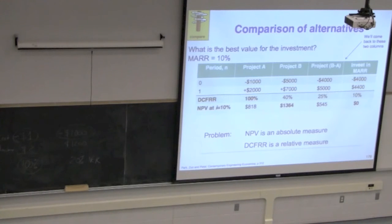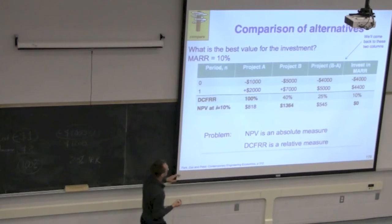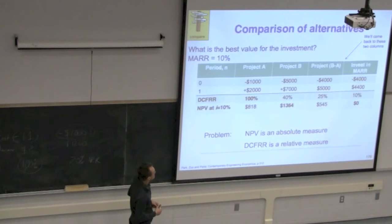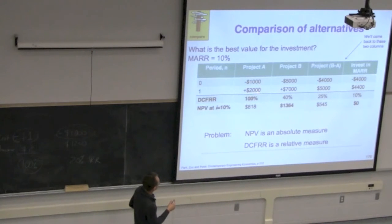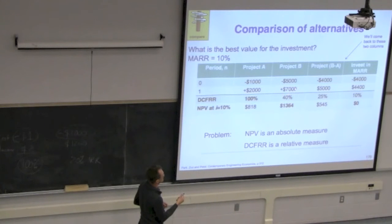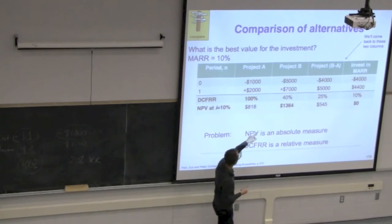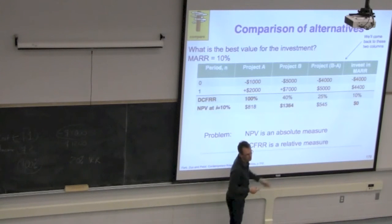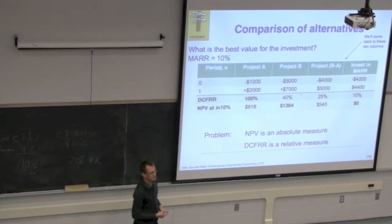Consider the following two cases. Project A: invest $1,000, get $2,000 back in year one — you've doubled your money, rate of return is 100%, NPV is $800. Mutually exclusive alternative Project B: invest $5,000, return $7,000. That's a profit of $2,000; accounting for time value of money, NPV comes to $1,364. Which is the better project to pick — A or B?